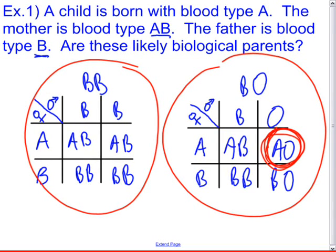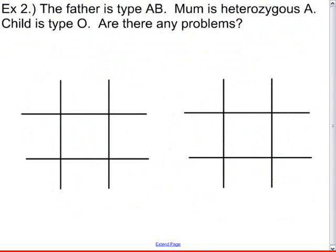Example two: the father is type AB, the mom is heterozygous A, and the child is type O. Are there any problems? Try the Punnett squares and give your answer, then unpause when you're ready.